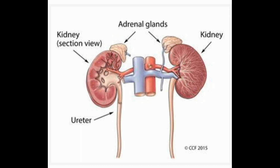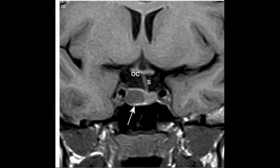An abnormality of the adrenal glands, such as an adrenal tumor, may also cause Cushing's syndrome. Most of these cases involve non-cancerous tumors called adrenal adenomas, which release excess cortisol into the blood. Adrenocortical carcinomas (adrenal cancers) are the least common cause and often cause very high hormone levels and a rapid onset of symptoms.